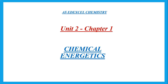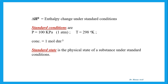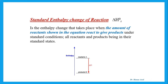The first chapter was on chemical energetics, and this deals with the enthalpy change. Delta H is the enthalpy change under standard conditions — that is 100 kilopascal pressure, 298 Kelvin, and concentration of solution 1 mole per decimetre cubed. This is what we mean by standard conditions, and we usually do this under standard state. Standard state is the physical state of a substance under standard conditions.